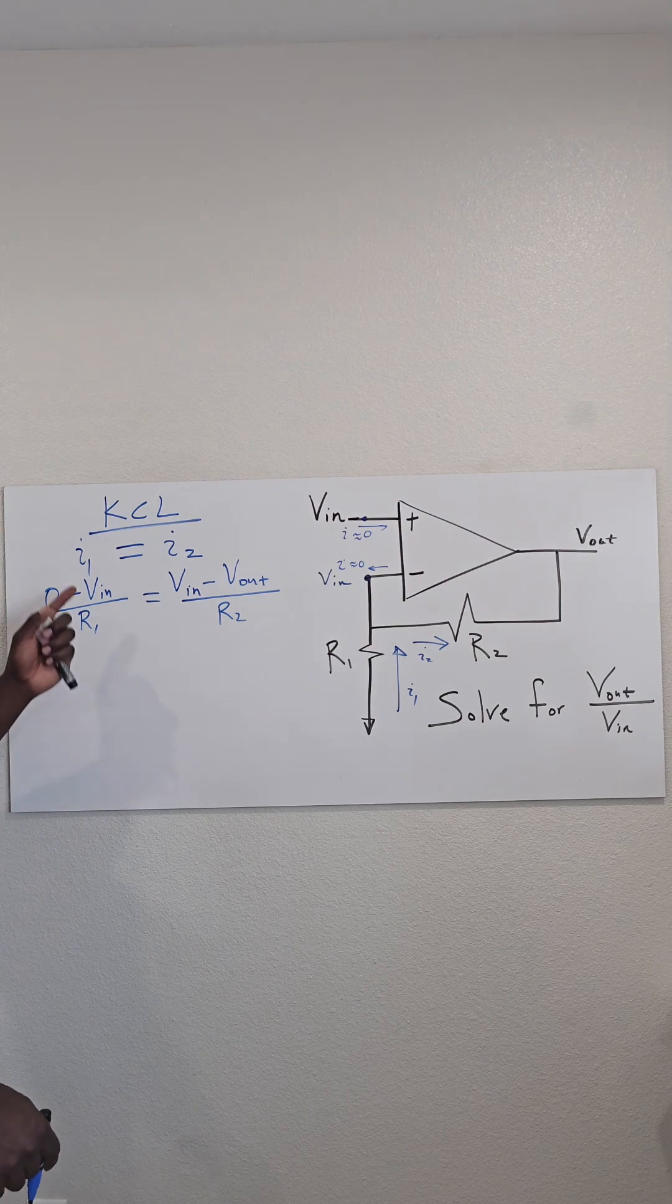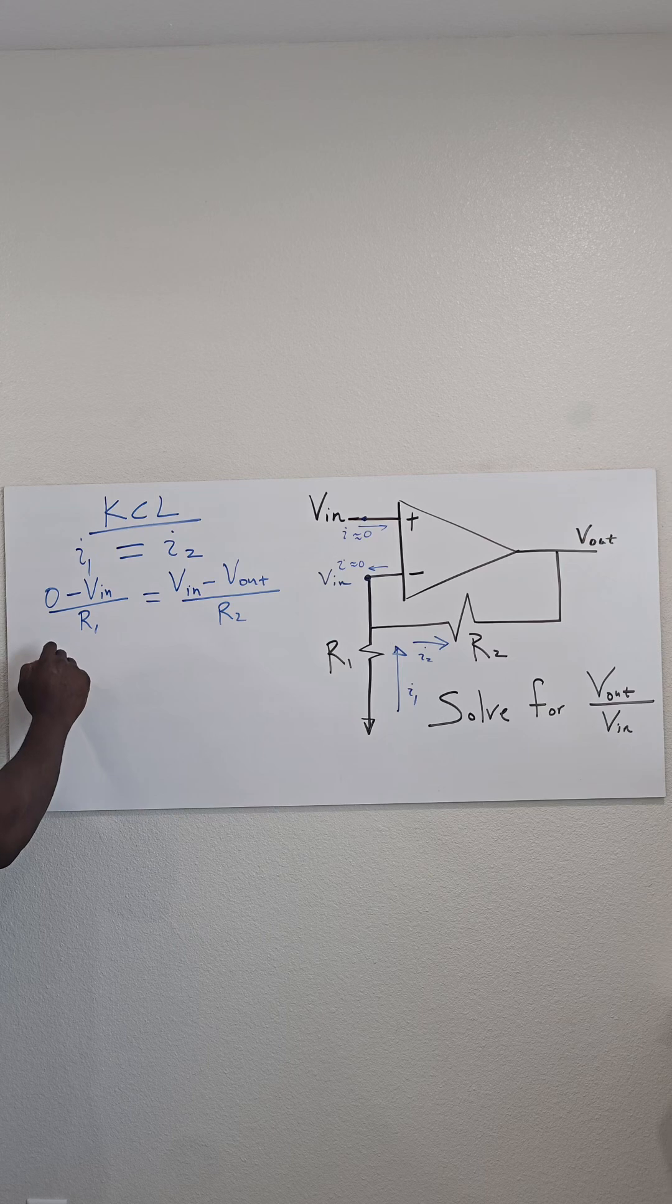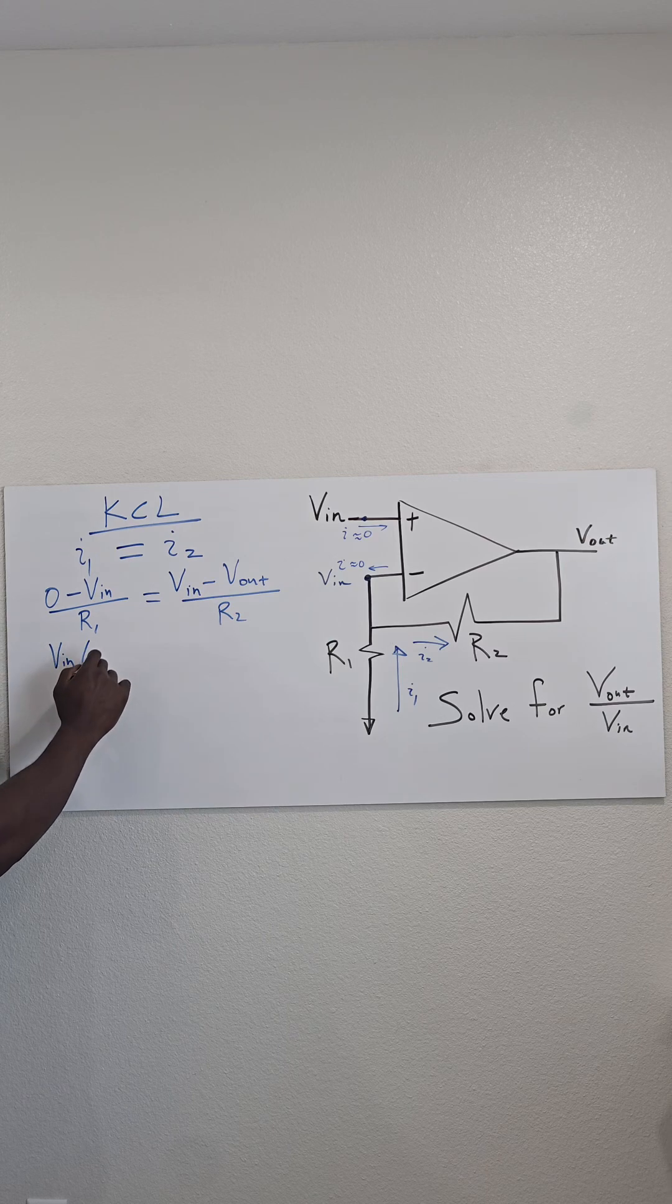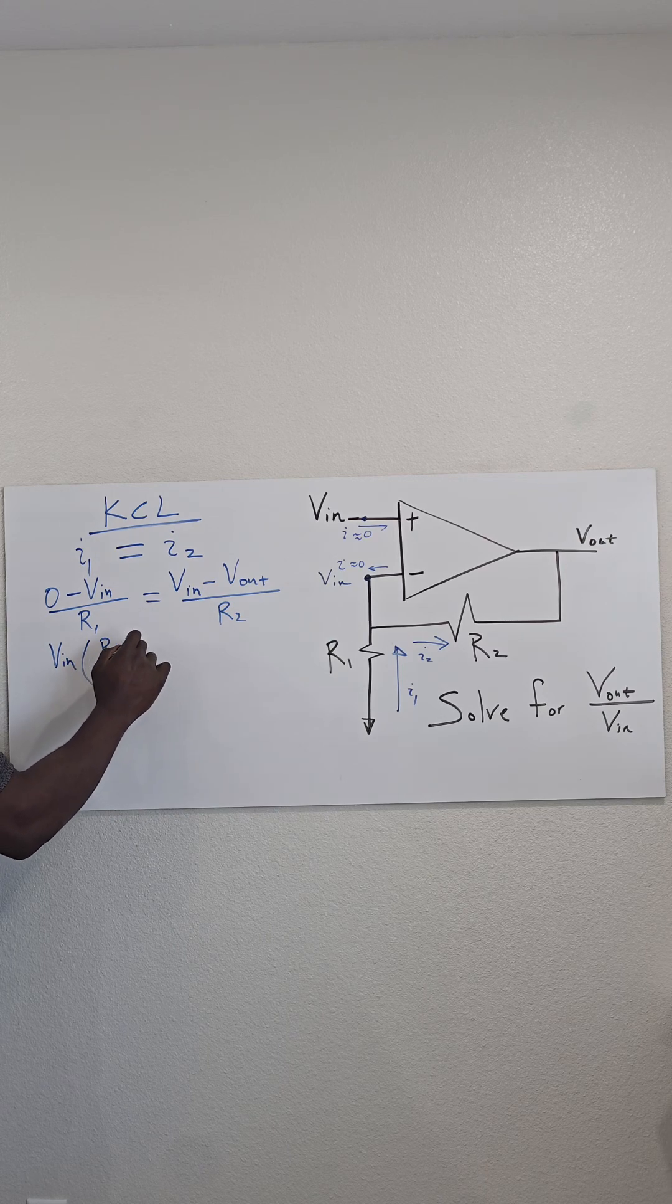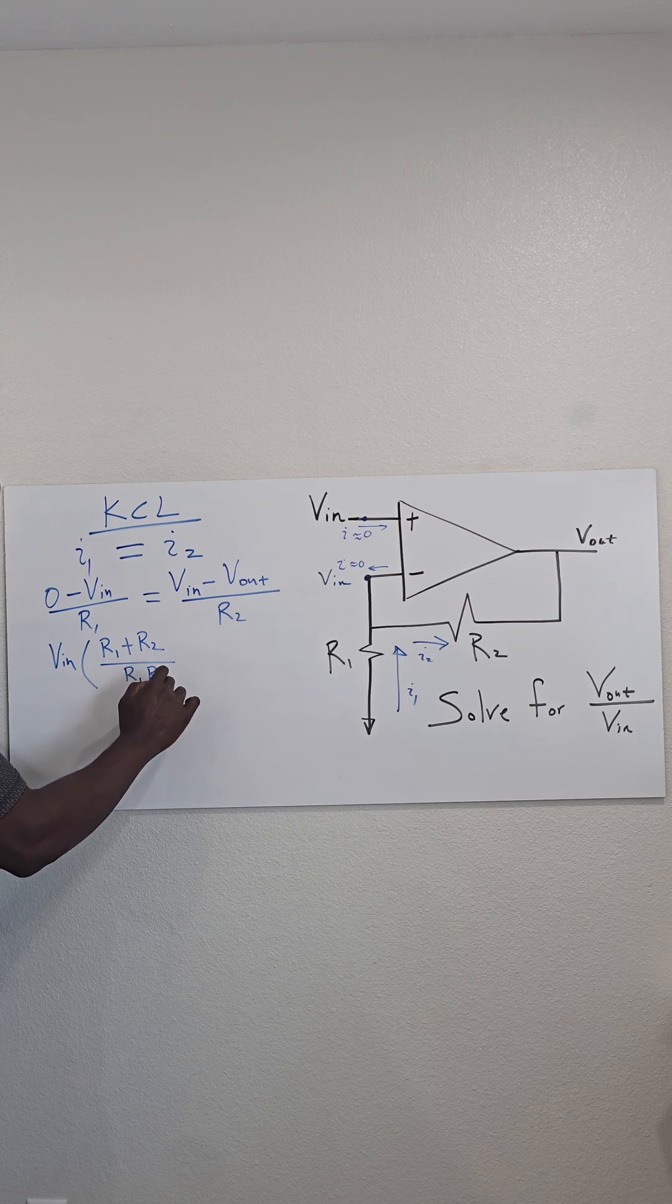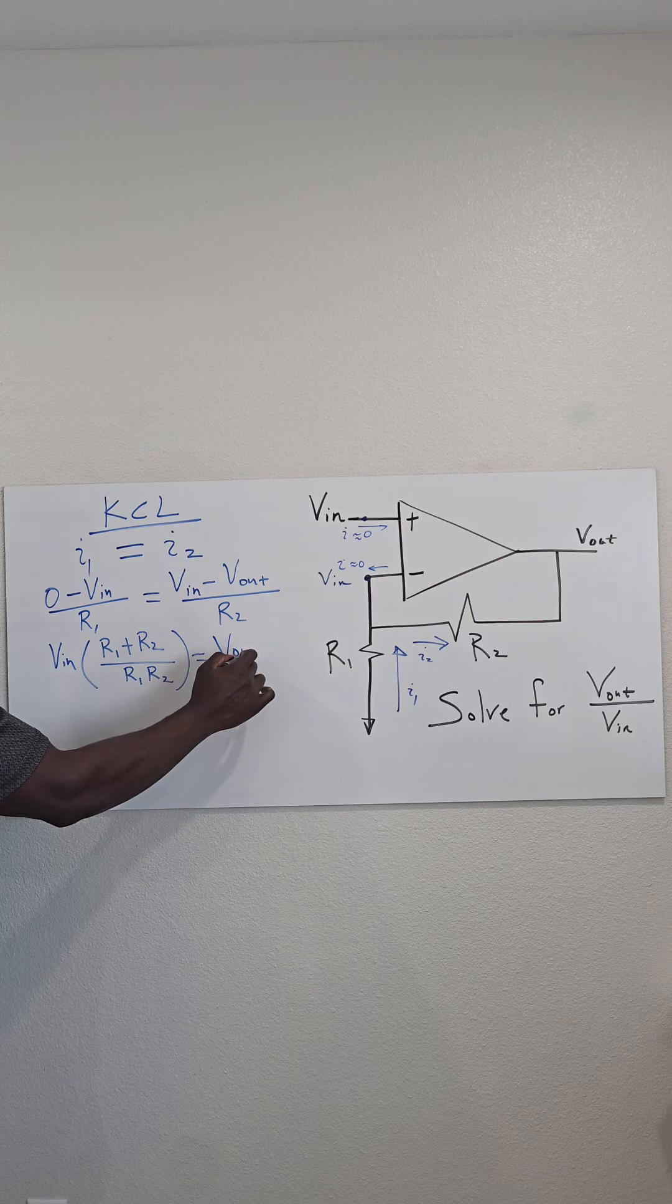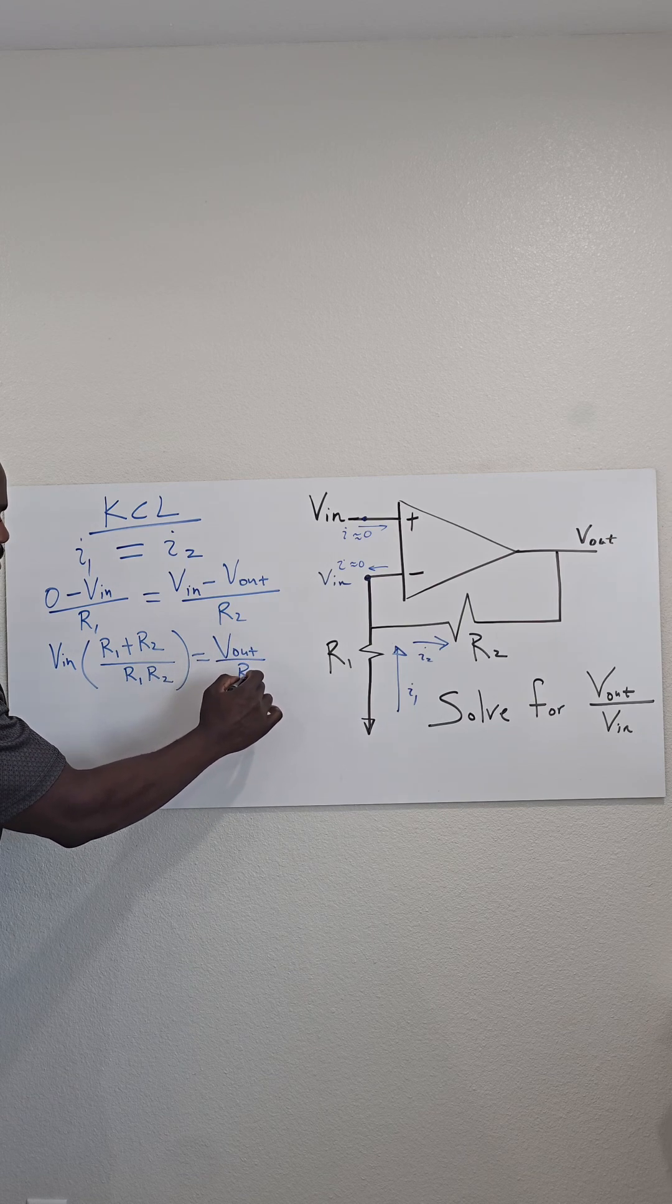Okay, when we do some manipulations and moving things around, we get that Vin times R1 plus R2 over R1 times R2 has to equate to Vout over R2.